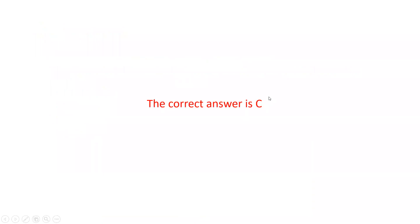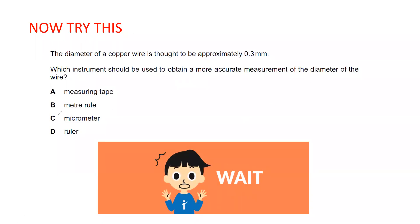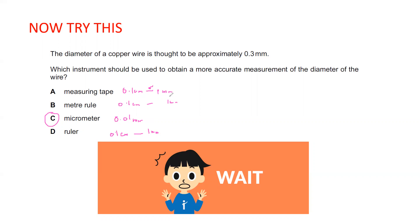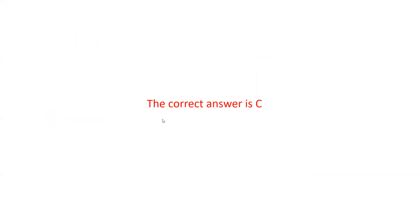The correct answer is C — the micrometer. The micrometer can record very small values down to 0.01 mm. A measuring tape or meter rule can measure down to only 0.1 cm or 1 mm. The same applies to a ruler. So the most accurate instrument is the micrometer, which can measure to 0.01 mm.